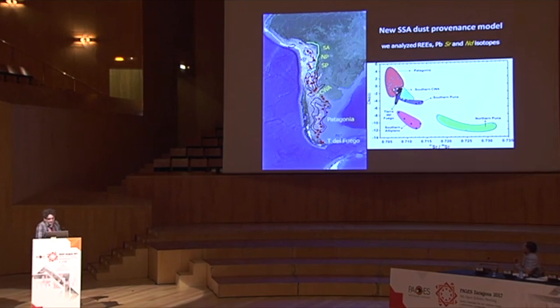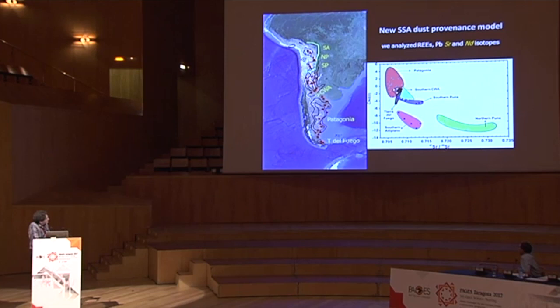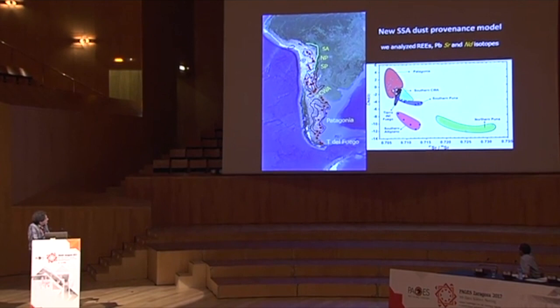We proposed a new Southern South America dust provenance model characterized in terms of rare earth elements and lead, strontium, and neodymium isotopes. For this talk, I will focus on strontium and neodymium data. These data indicate that when the isotopic compositions of topsoil samples from Southern South America are plotted together, the different potential source areas can be differentiated quite well from each other.